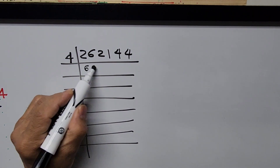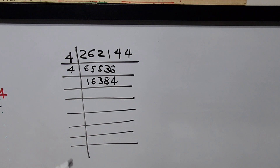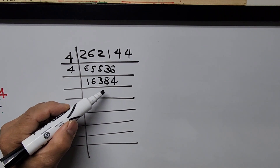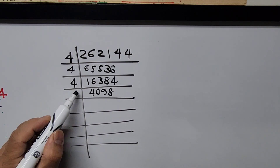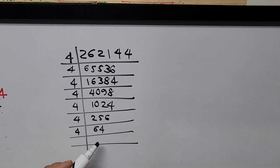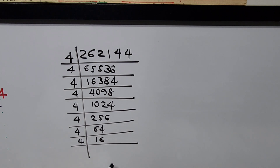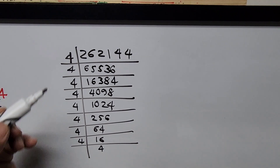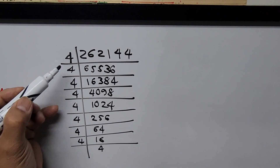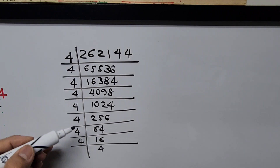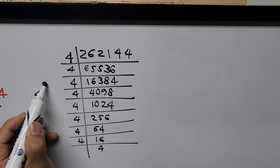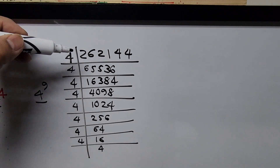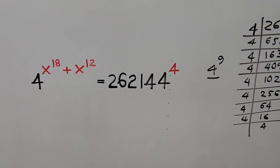Dividing 262,144 by 4 gives 65,536; divide by 4 again gives 16,384; divide by 4 again gives 4,096; divide by 4 gives 1,024; divide by 4 gives 256; divide by 4 gives 64; divide by 4 gives 16; divide by 4 gives 4; divide by 4 gives 1. Counting those factors — 1, 2, 3, 4, 5, 6, 7, 8, 9 — so 262,144 equals 4 to the 9th power.